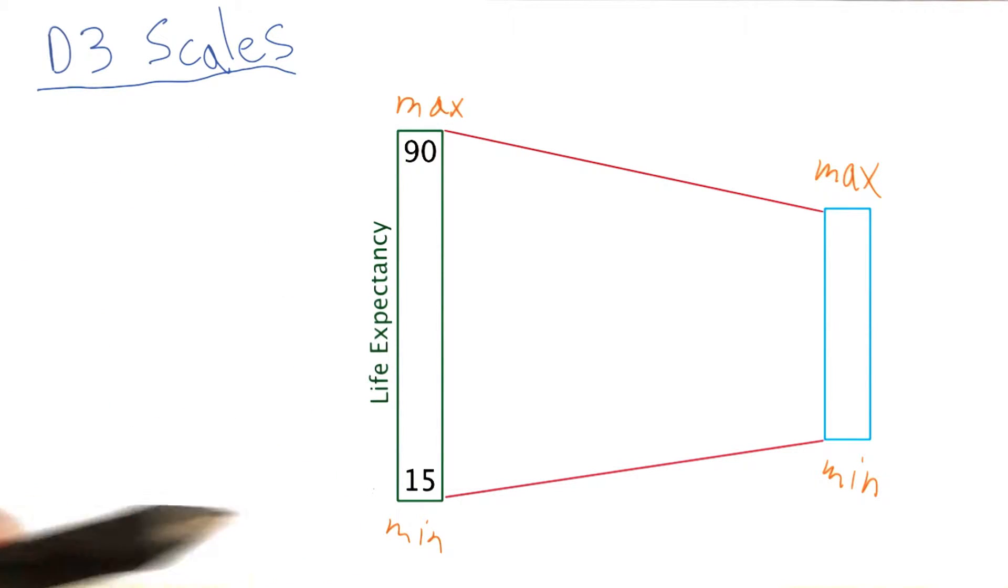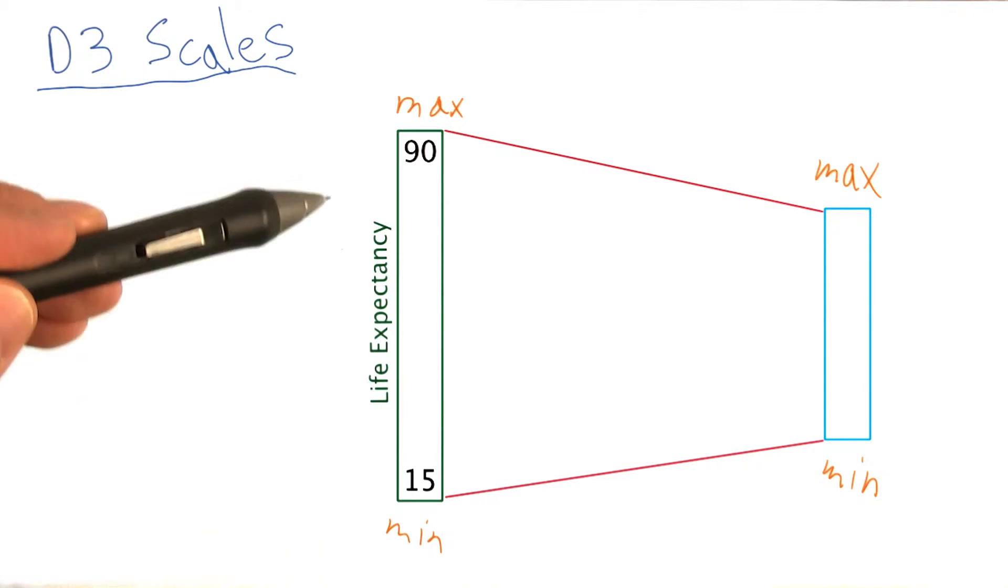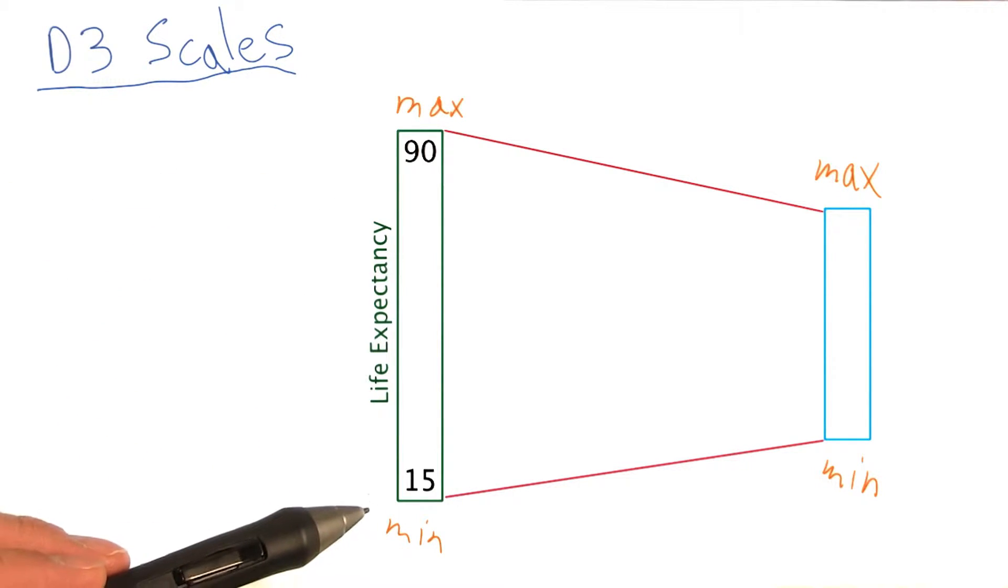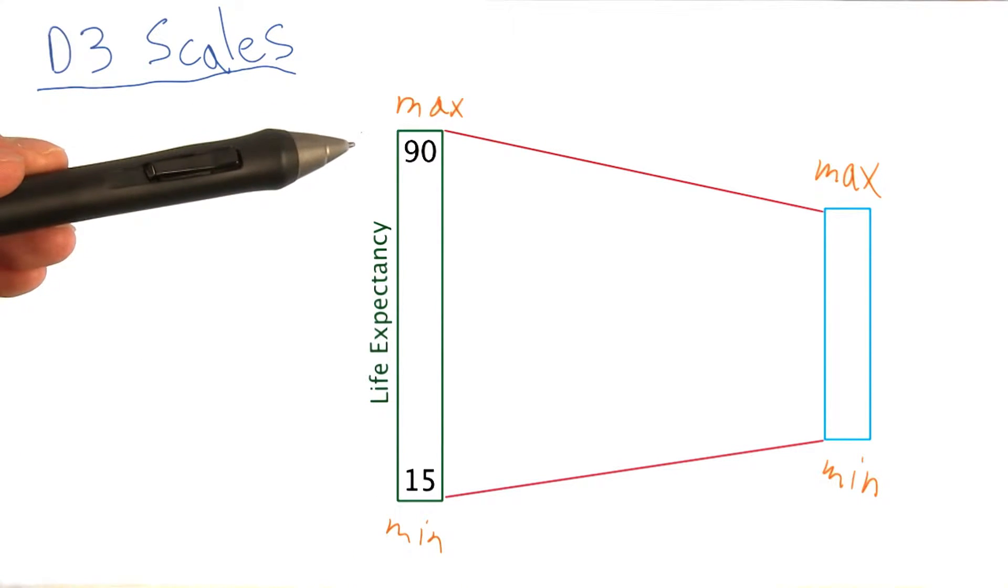This green rectangle here represents the scale of the life expectancy of the Gapminder plot. We see at the bottom there's a minimum value of 15, and at the top is a maximum value of 90.